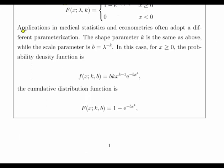This is the important thing here. Applications in medical statistics and econometrics often adopt a different parameterization. The shape parameter k is the same as above, but the scale parameter is b, which is lambda to the power of minus k. So in this case, for x greater than or equal to 0, the probability distribution function here is given as follows.